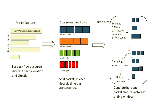Because IoT devices have limited flow types, you can use coarse-graining of flows to categorize device flows. This is the feature extraction process: you've got the device flows, then you coarse-grain them using the filter of location and direction, which produces four flows to extract features on: internet inputs, internet outputs, local inputs, and local outputs.